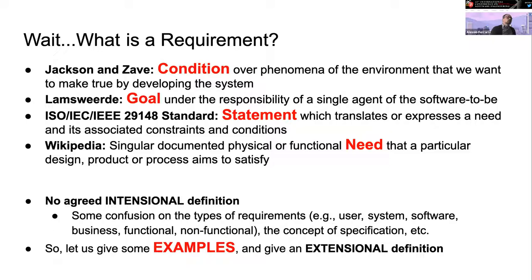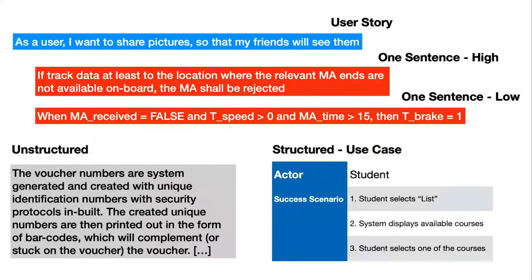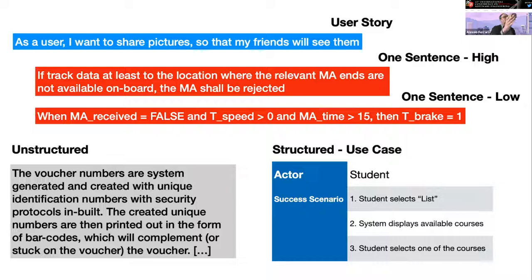It is good to give some examples to provide an extensional definition. Here we have a few examples of typical requirements. The first is a user story, typically used in agile. The second is a so-called SHALL requirement — the very typical requirement specification. You can have higher or lower level SHALL requirements, or structured text expressing needs to be satisfied by the software, or longer structured text in the form of use cases.